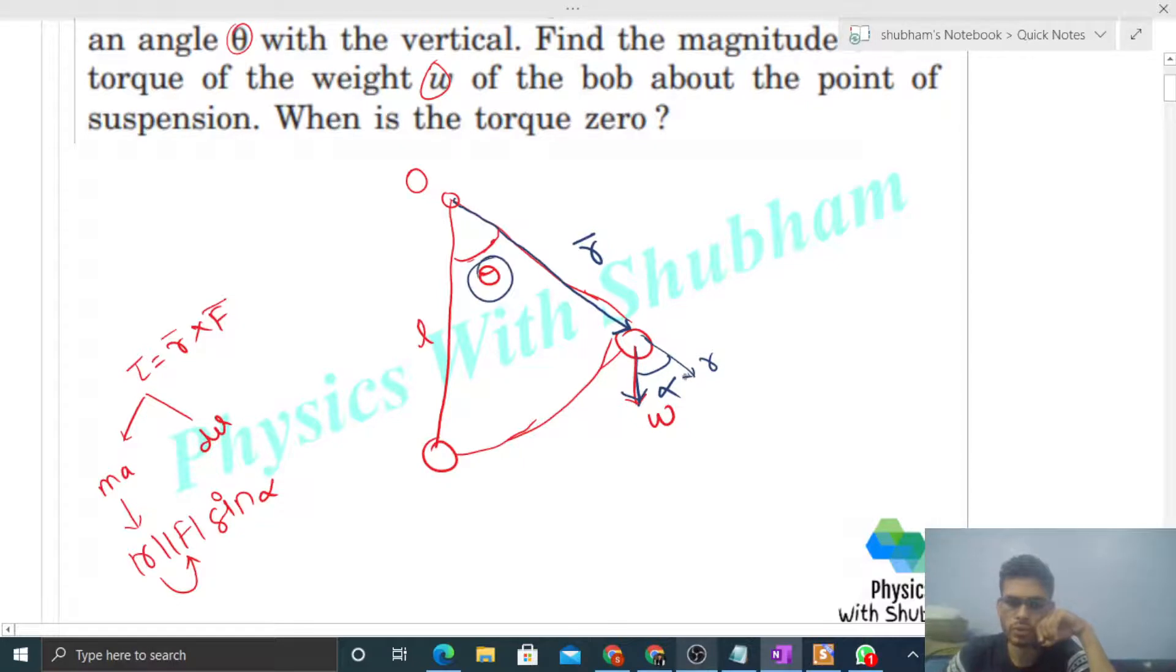So now you can put theta instead of alpha. F ka magnitude is the weight, that is given, right? And r ka magnitude, r ka magnitude is nothing but the length of the pendulum itself. This r, its magnitude, see, the length is l, so r ka magnitude you can put as l. So l into w into sine theta, right?